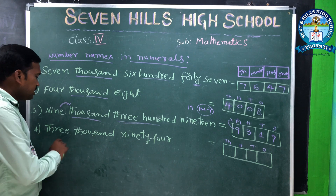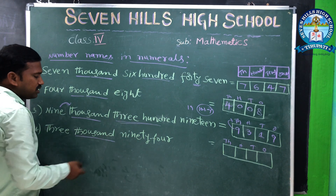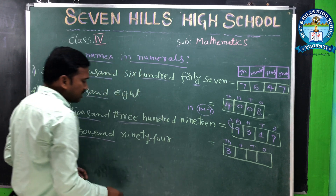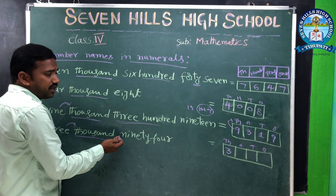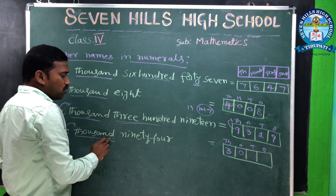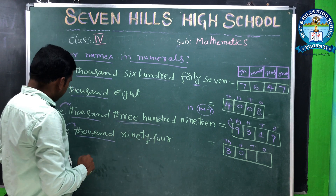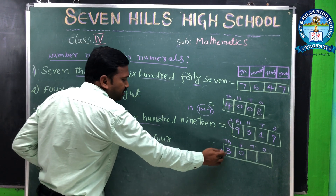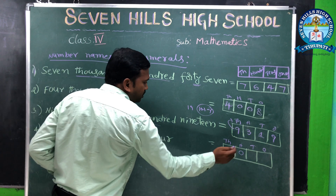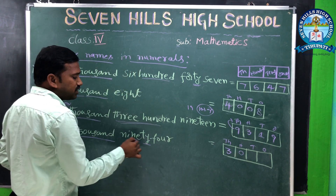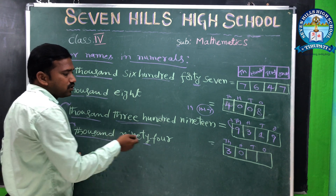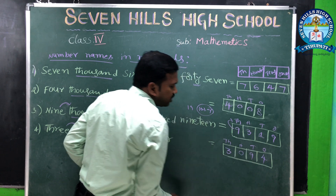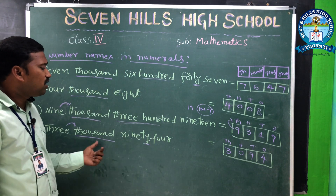Next question: 3094. 3000 means 3 is in the thousands place. There is no hundreds, so we keep 0 in the hundreds place. 94 means 9 × 10 = 90, so 9 is in the tens place, and 4 is in the ones place. The number is 3094.